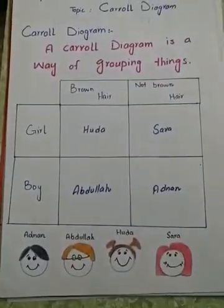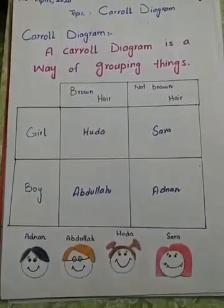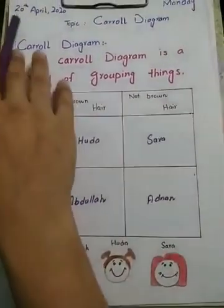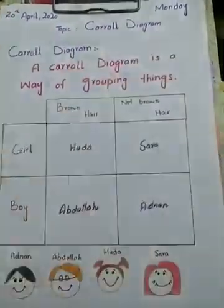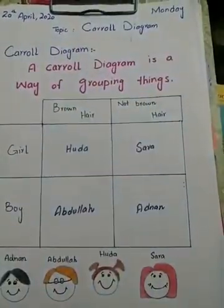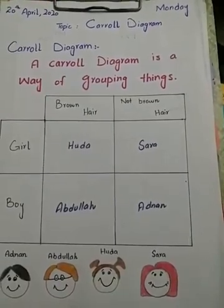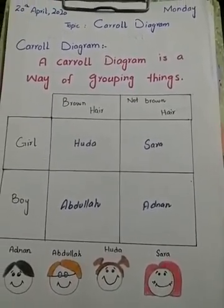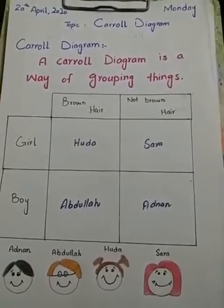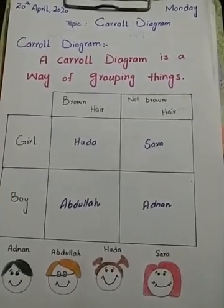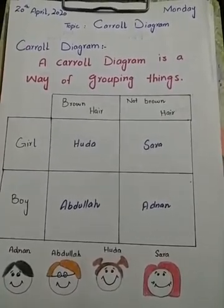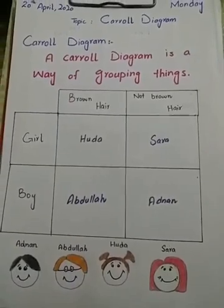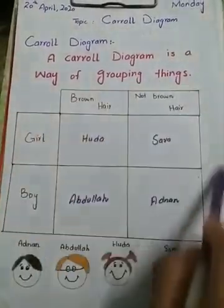Bismillah. Assalamu alaikum, how are you all? I hope you are all doing good. Today the date is 20th of April and the day is Monday. Our topic is Carroll diagram. A Carroll diagram is a way of grouping things. We can make groups by sorting data in the suitable block.